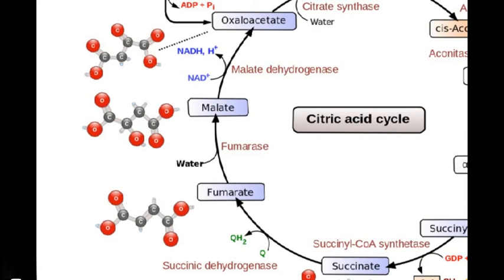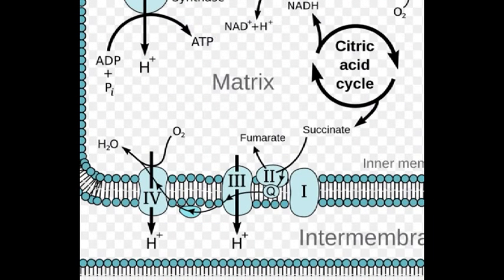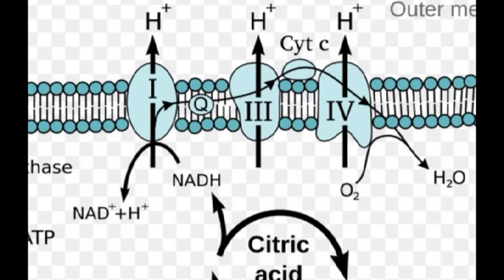The succinate moves to an inner membrane protein and changes to fumarate. Importantly, electrons are released down an electron transport chain. This allows hydrogen ions to move from the matrix to the intermembrane space. Eventually the electrons meet a protein where, with oxygen, water is formed. Hydrogen ions are also carried through from the matrix to the intermembrane space. If there is no oxygen supply, respiration would stop at this stage.